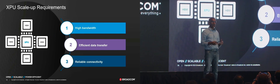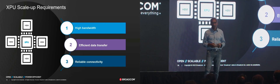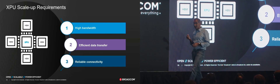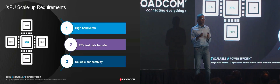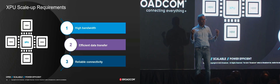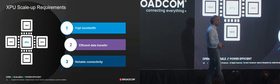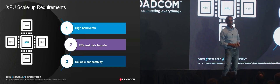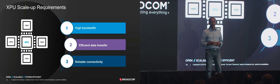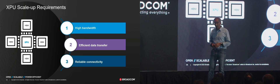That's a lot of bandwidth coming out of these XPUs that needs to be connected. When you're having memory sharing happen across XPUs, you want data transfer to be very efficient — meaning the network overhead for shuffling data must be minimized. And lastly, you want that network to be reliable, because the last thing you want is packets being dropped and spending time troubleshooting or rolling back to the last known checkpoint state.